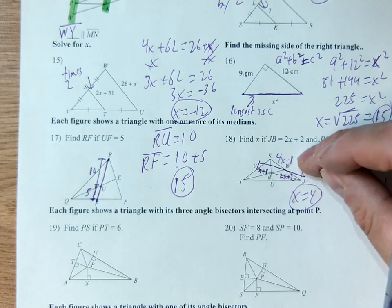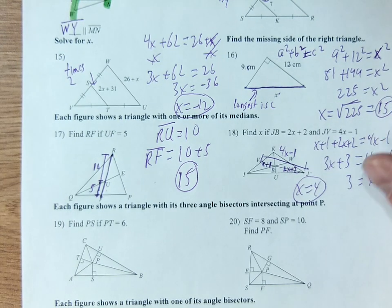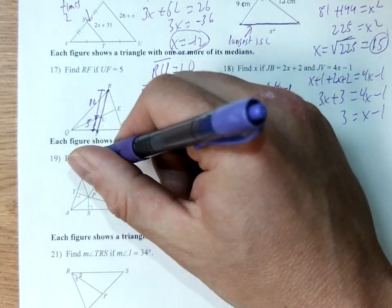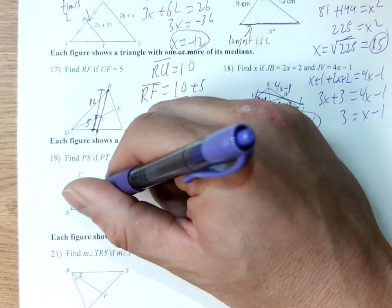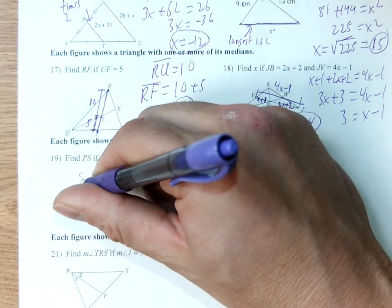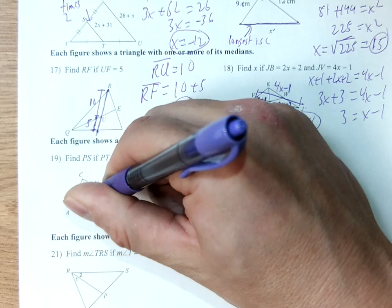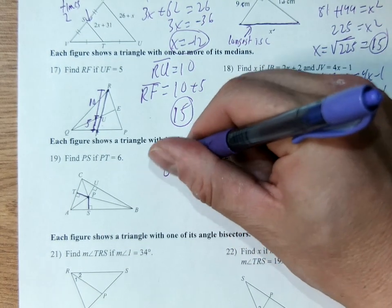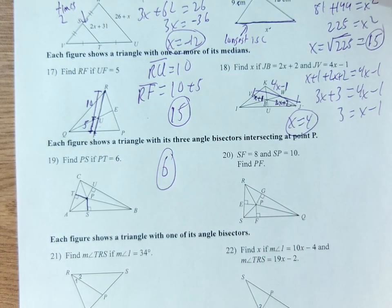This will be the longest question on here, the hardest one for you. Next one, easy question. PS is, PT is 6. That's P to T. These are equivalent. They're the same. 6. Easiest question on here.